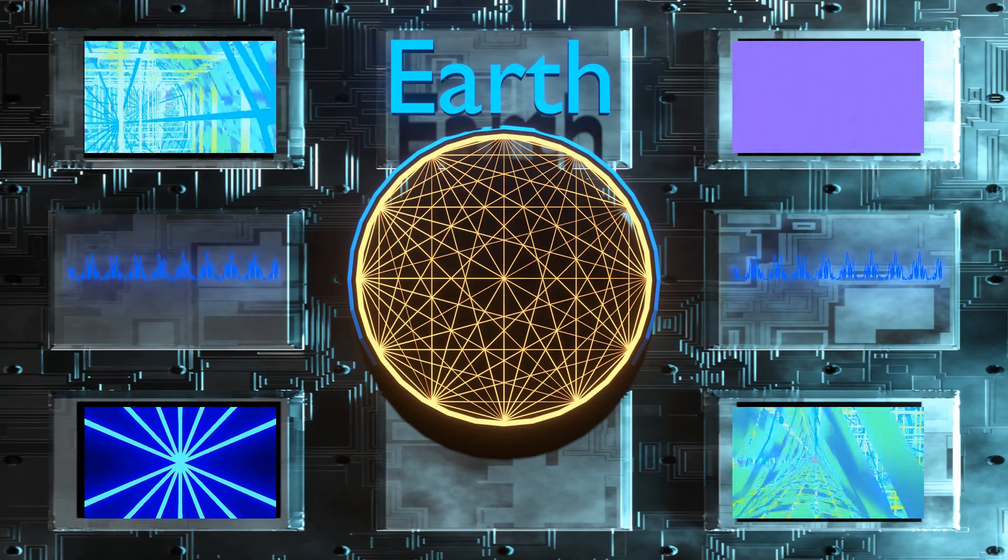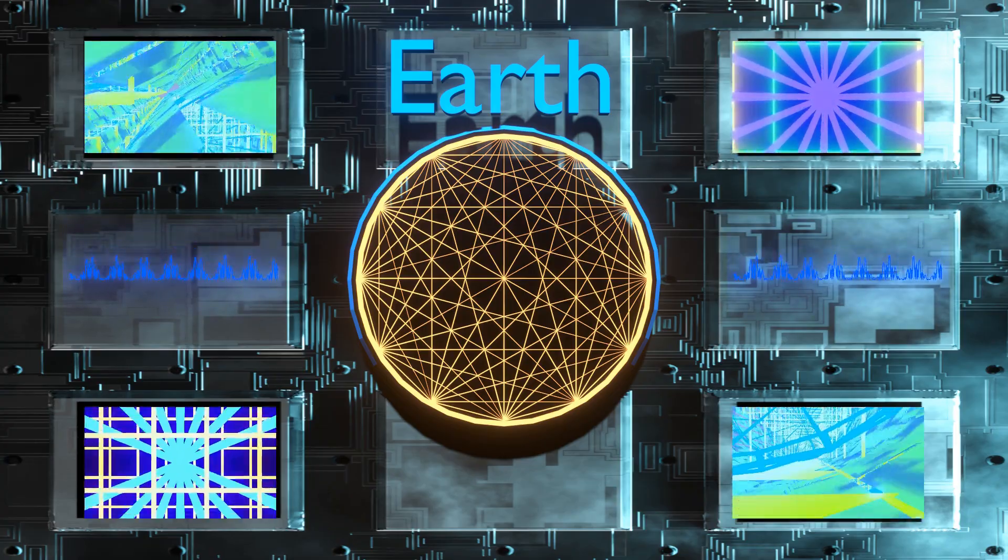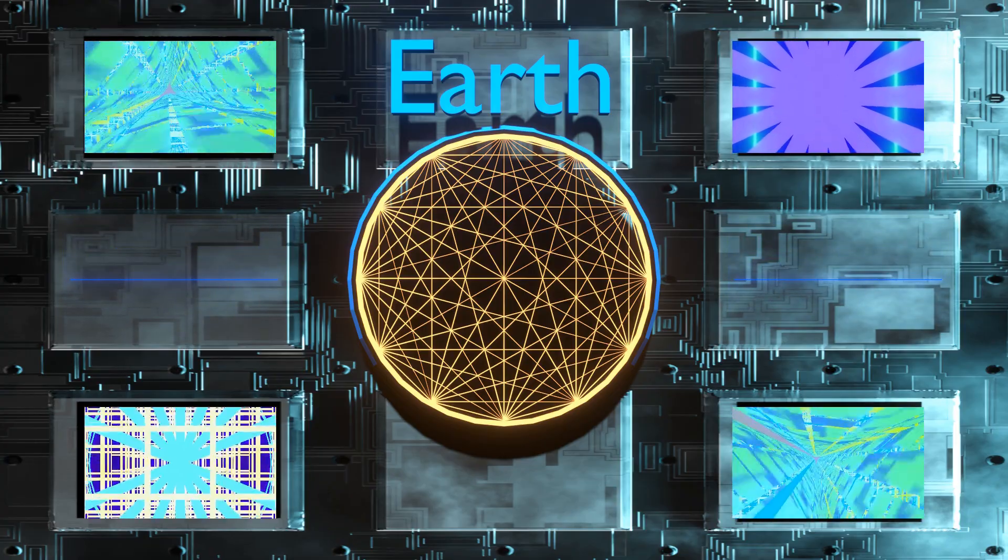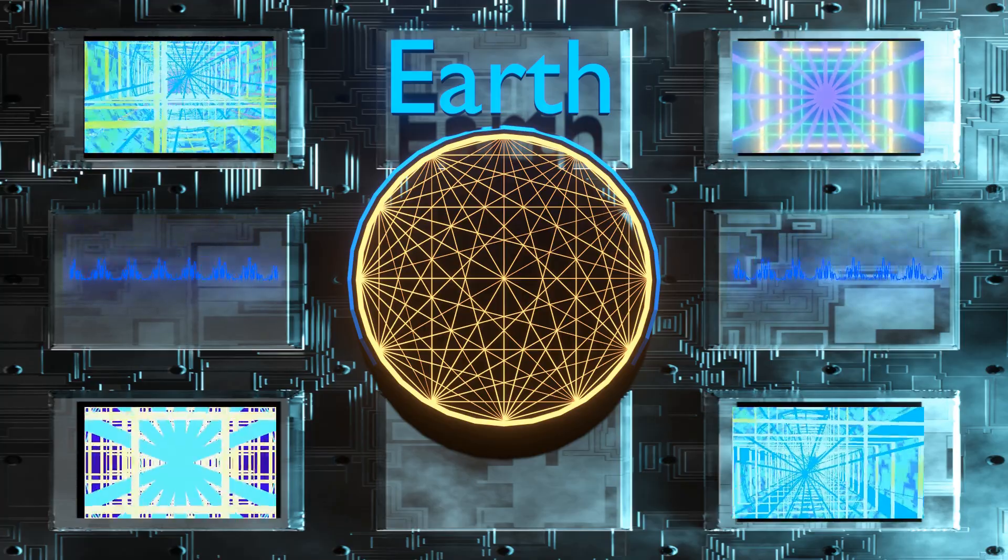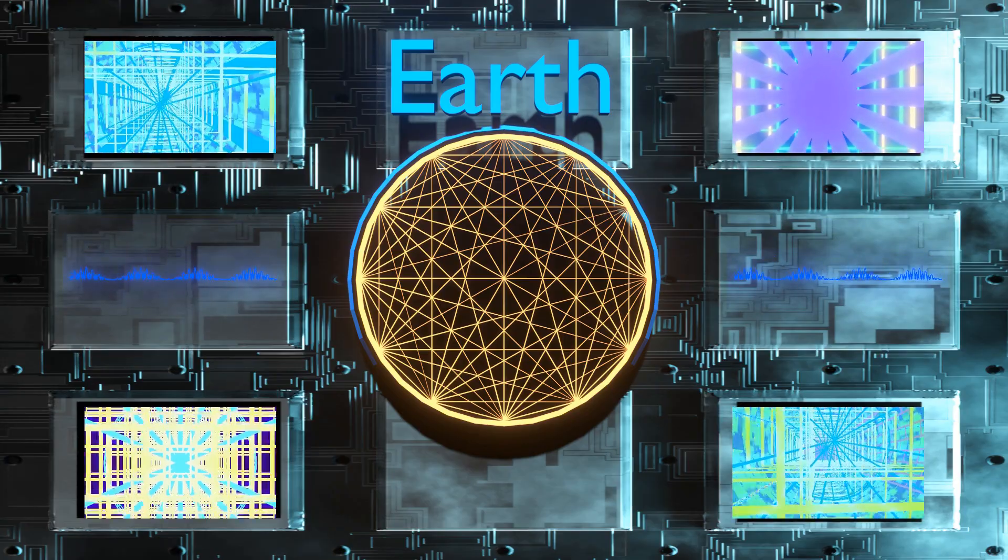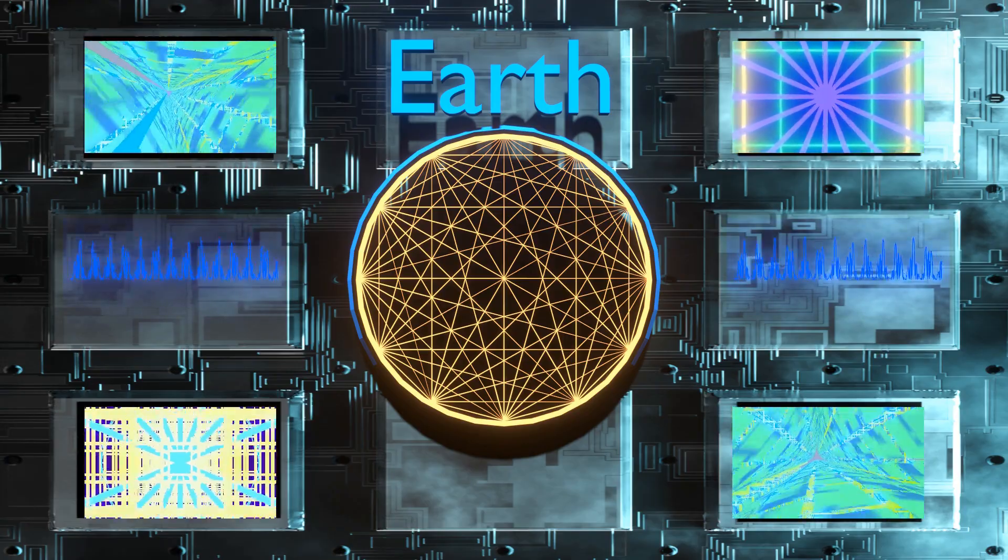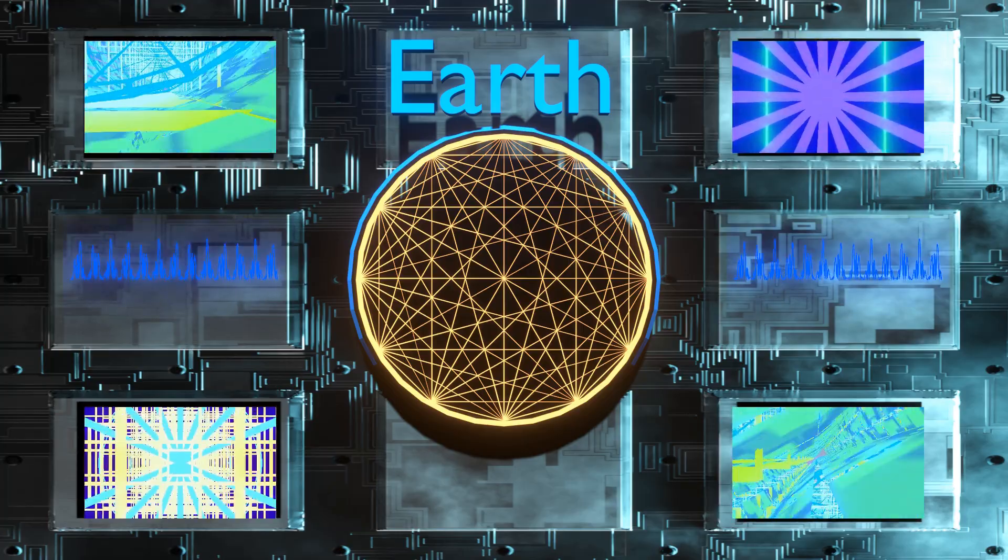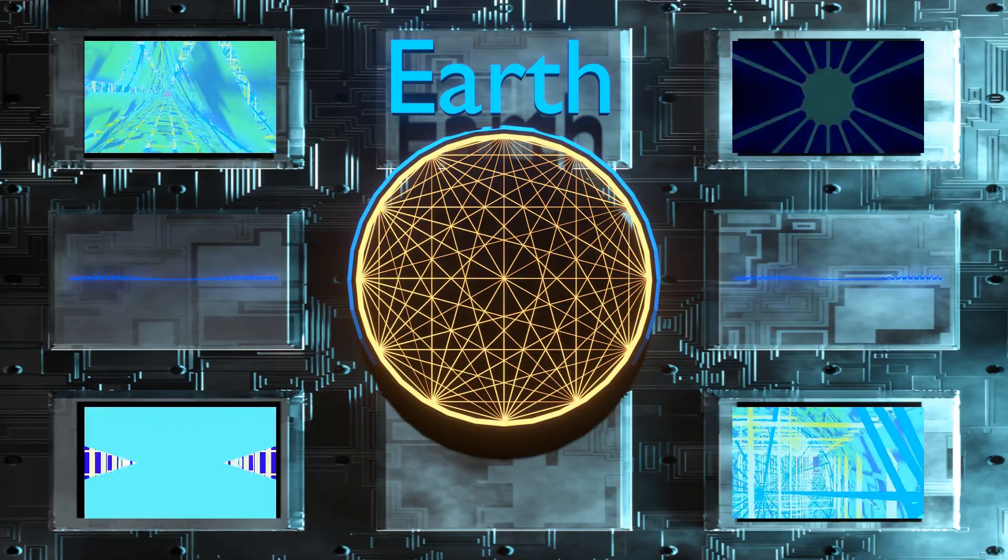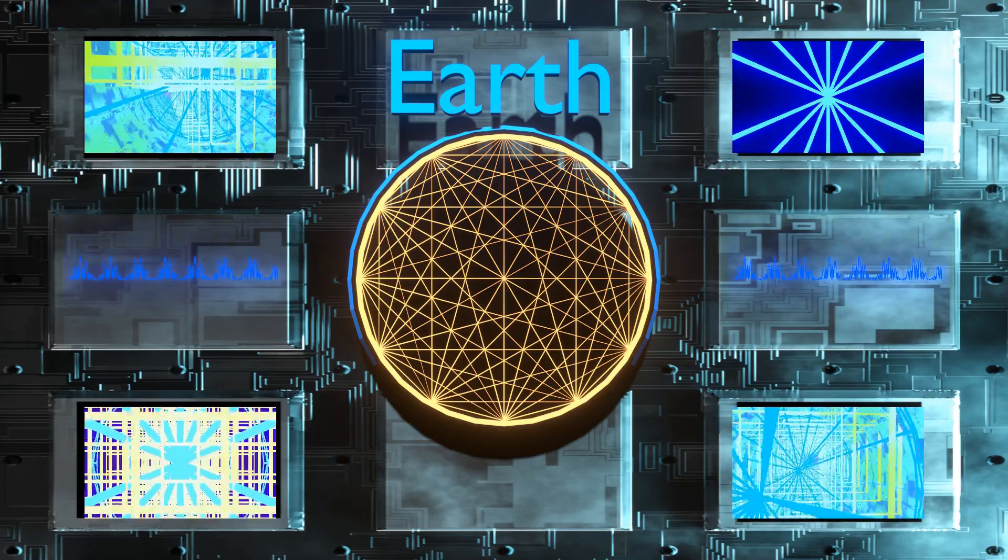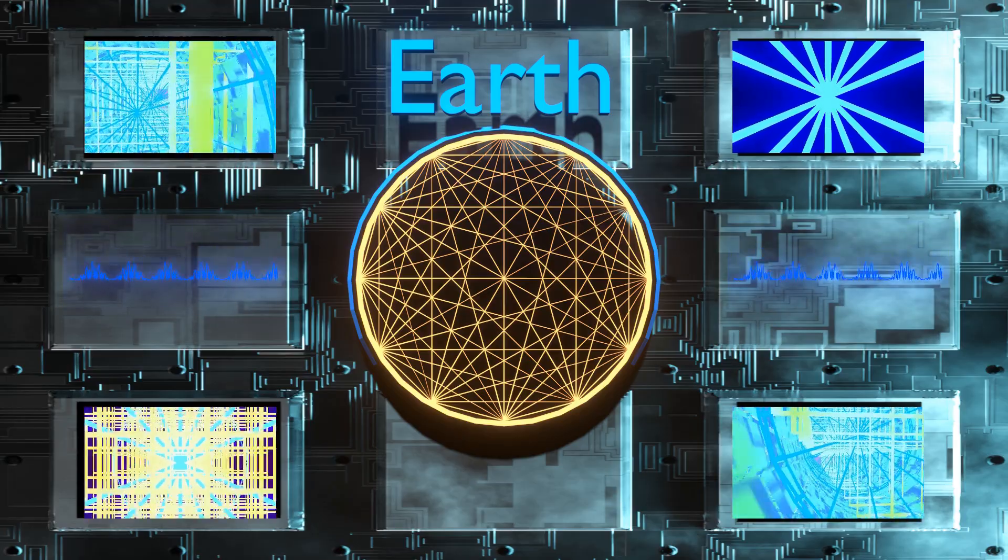Long before the advent of modern science, various cultures and civilizations had their own interpretations of the primeval state. The primordial ooze, or its symbolic equivalence, appears in numerous creation myths as a formless, chaotic substance from which the ordered universe emerged. In these narratives, the primordial waters or chaotic matter often embody both creation's raw potential and the threat of unbridled disorder. This duality is central to many creation myths, reflecting humanity's attempts to comprehend the paradox of creation.